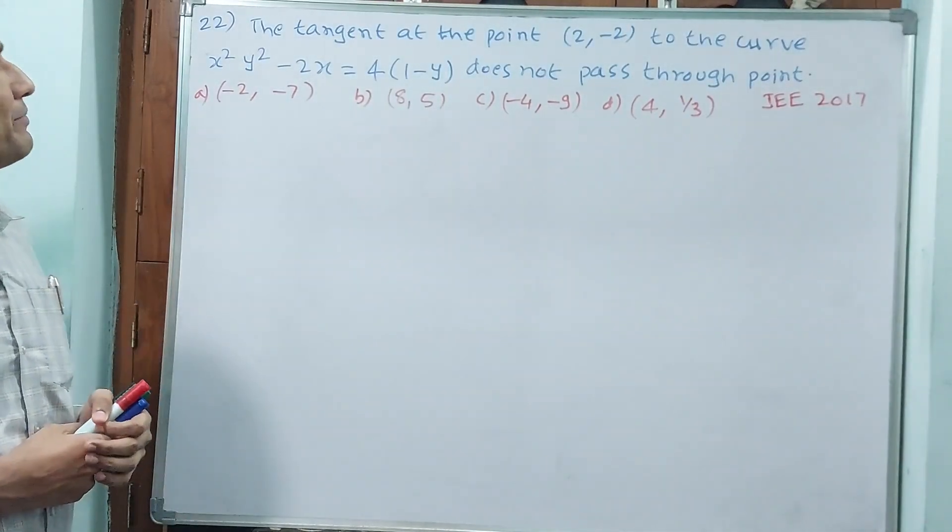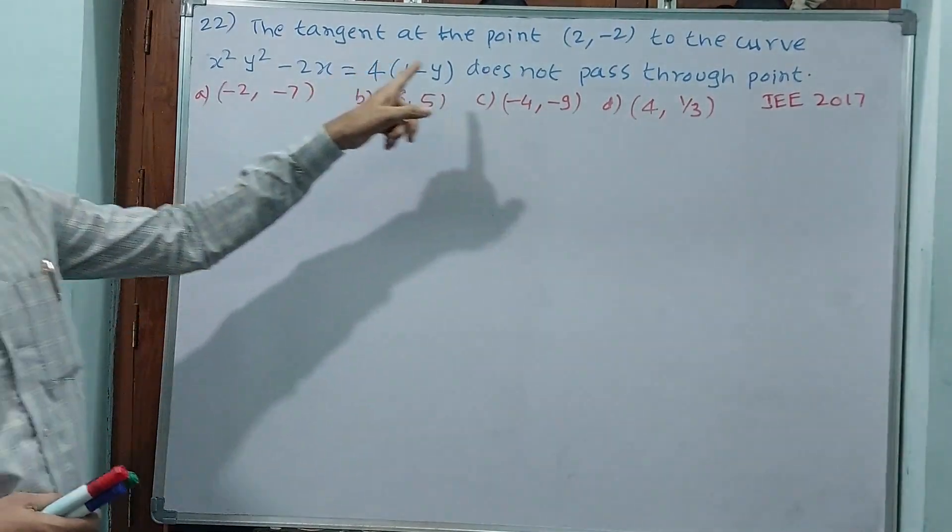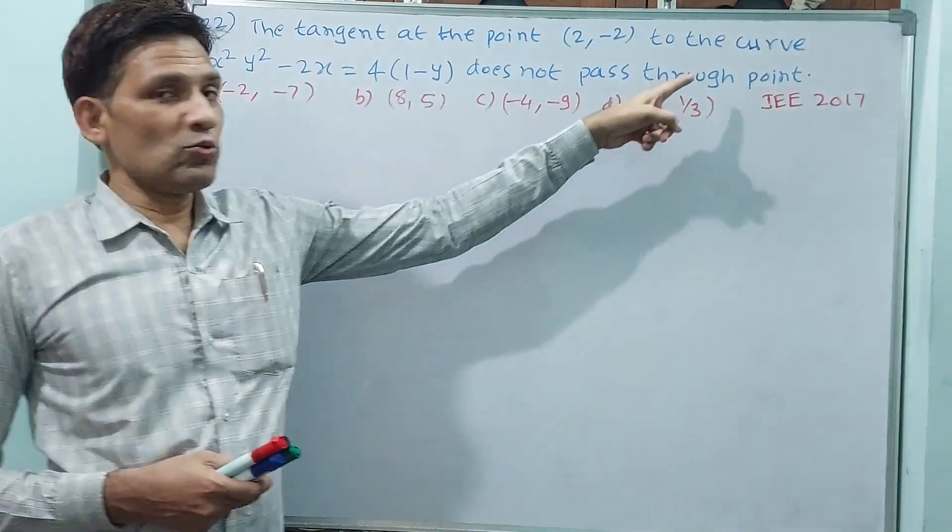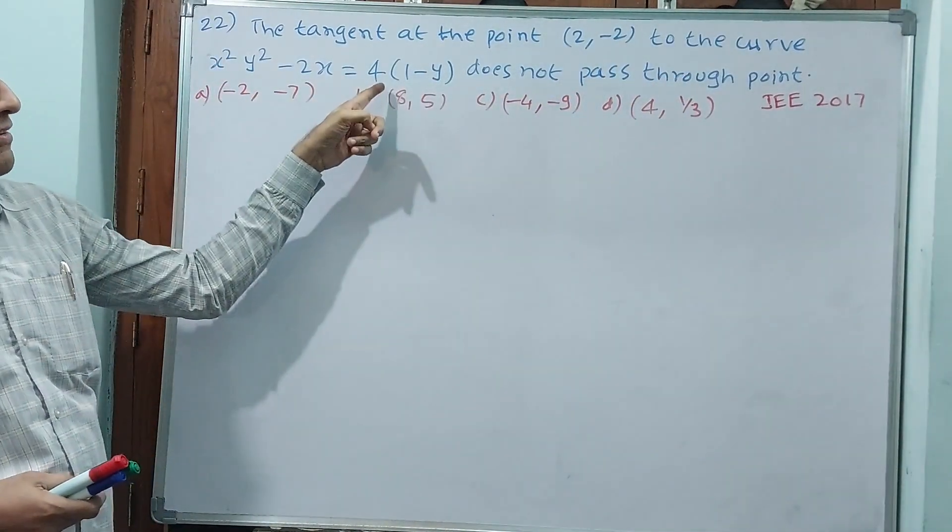Okay, let us see question 2. The tangent at the point (2, -2) to the curve, this is the curve.